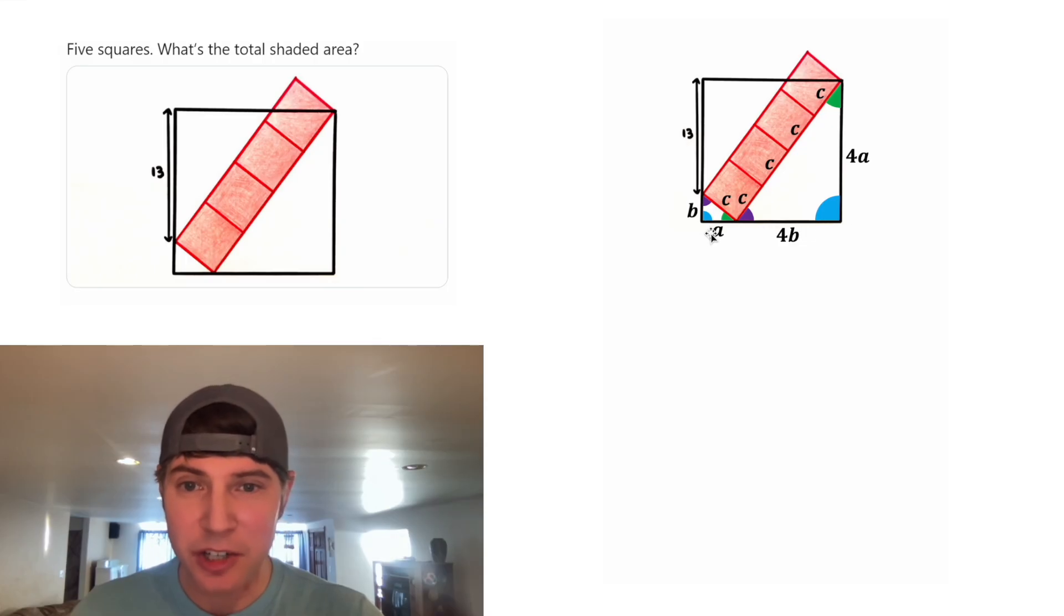Now we have three different ways to measure the side of this larger square. Let's set them equal to each other. So we'll have this side A plus four B equal to this side four A. And then we can also do this side B plus 13 equal to this side four A. And now we have two equations and two variables, so we can solve for both A and B.